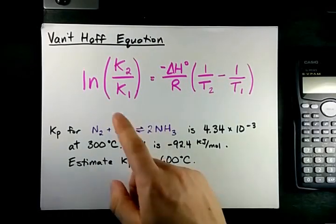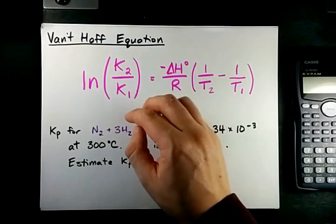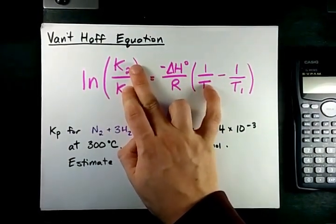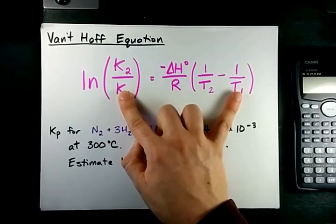All right, today we've got a little lesson on the Van't Hoff equation, which is how you can calculate the equilibrium constant at a new temperature if you're already given the equilibrium constant at one other temperature.